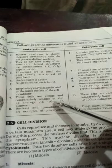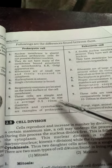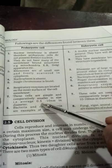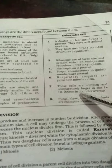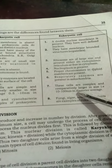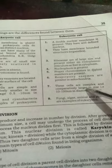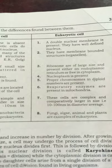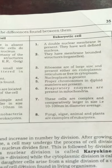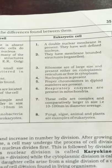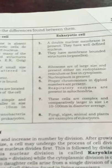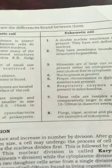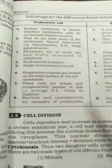Regarding size, the average size of a prokaryotic cell is around 10 nanometers in diameter, while the average size of a eukaryotic cell is larger — around 10 to 100 nanometers in diameter — and is comparatively more complex.